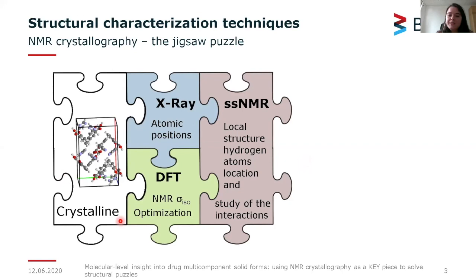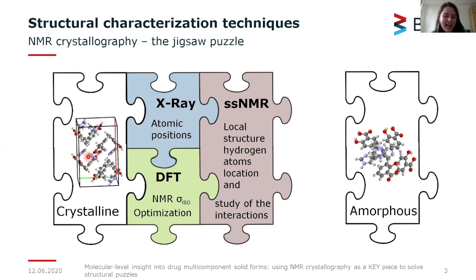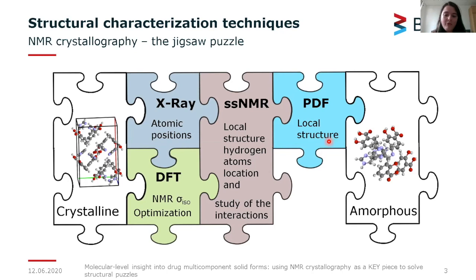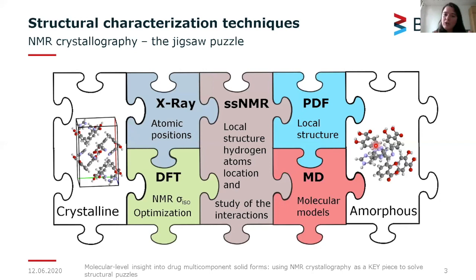With all three tools we can fully characterize crystalline materials. For amorphous materials — another topic of great interest at BAM, especially for pharmaceutical systems — we combine solid-state NMR with pair distribution function analysis. This technique gives us the probability of finding two pairs of atoms at a certain distance, extracting information about both intra- and intermolecular distances. Together with solid-state NMR we can build models, run molecular dynamic simulations, and calculate the pair distribution function to compare with the experimental one, fully characterizing amorphous materials.